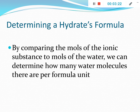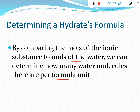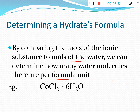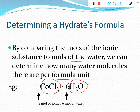To determine a hydrate's formula, we compare the moles of ionic substance to the moles of water. Anytime you're talking about a chemical formula you're essentially talking about a mole ratio, so we can find the moles of water relative to the formula units and express that as a ratio. For example, cobalt chloride has one formula unit for every six waters — a one-to-six ratio — so one mole of ionic substance to six moles of water.